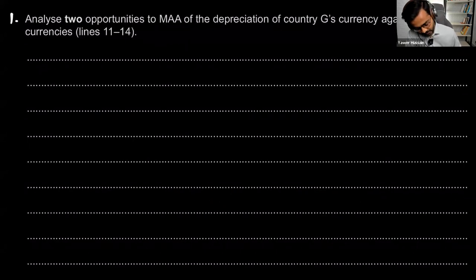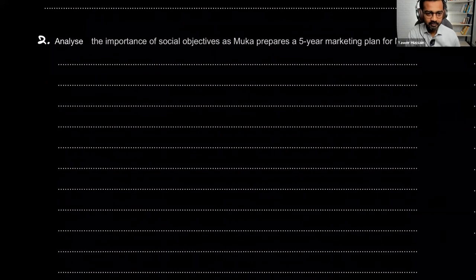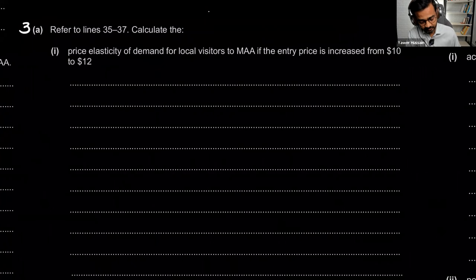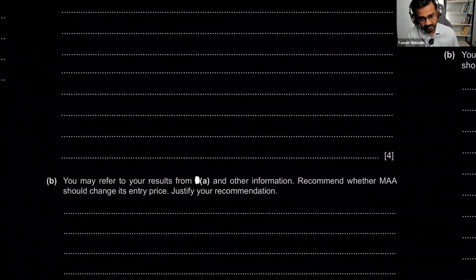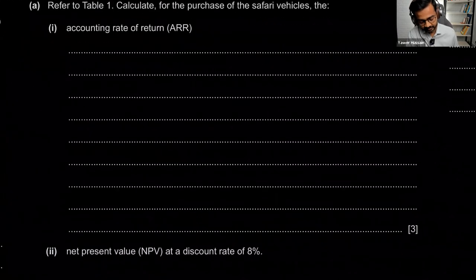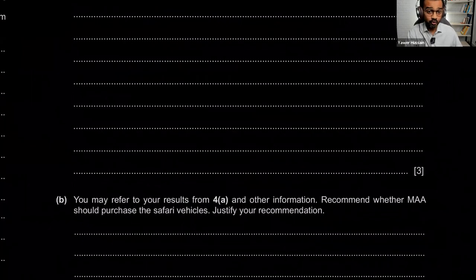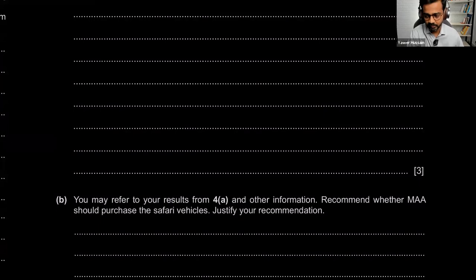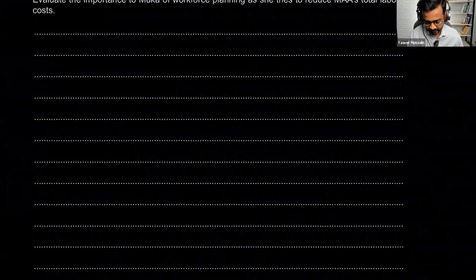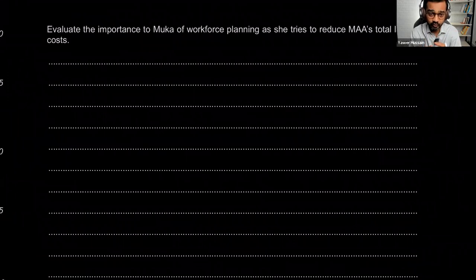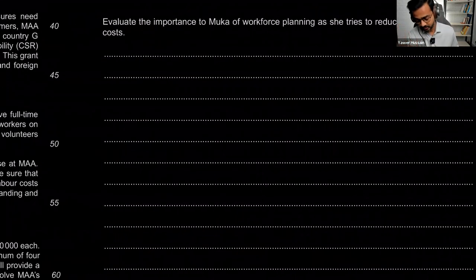The second question is about marketing plan — an eight-mark question. Then there's a marketing calculation: PED, price elasticity of demand. Then we'll be calculating total contribution, and there's a pricing decision to be made. Question four is a finance question with investment appraisal — ARR, NPV — and then we'll recommend whether to go ahead with the decision. That's always a 12-mark question. Question five is about HR. Operations is also part of question four. All units are represented, so prepare for everything.